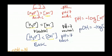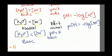We could also look at it in terms of pH. pH is the negative log of the hydrogen concentration. And if it's less than 7, it's acidic, equal to 7, it's neutral, and greater than 7, basic.